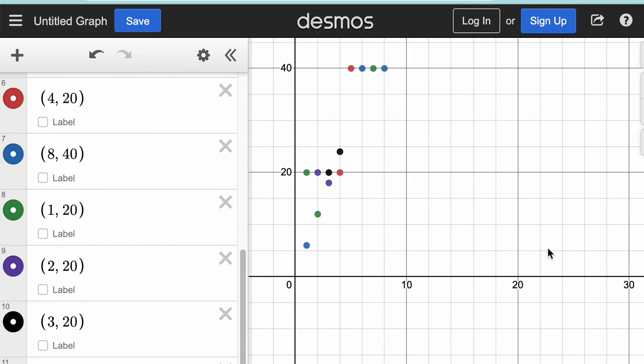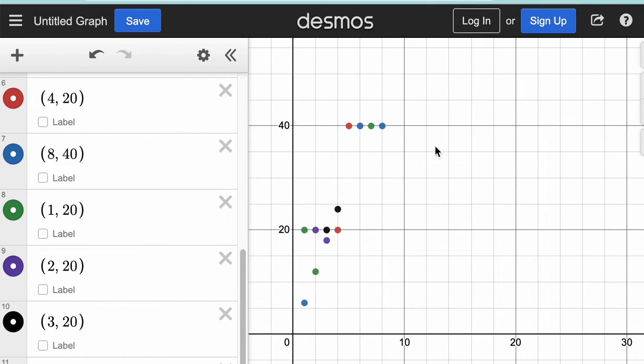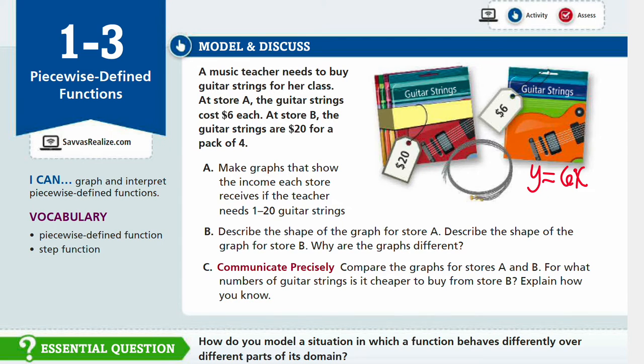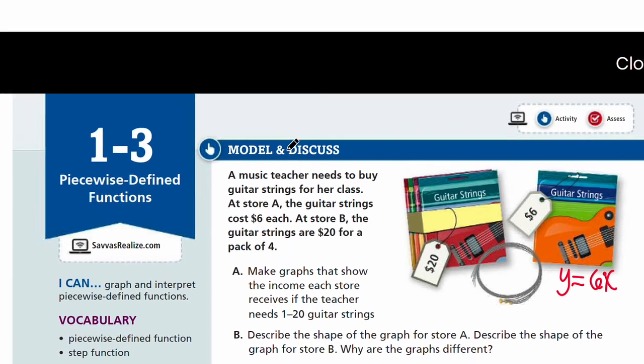So these are the 2 graphs that we want to graph. If the variables X and Y represent the same things, then our 2 graphs are going to look very different. The first one may look like a line, but the second one, you have multiple lines that jump. So this is a situation where it's very odd. Let's look at part A and try to graph.